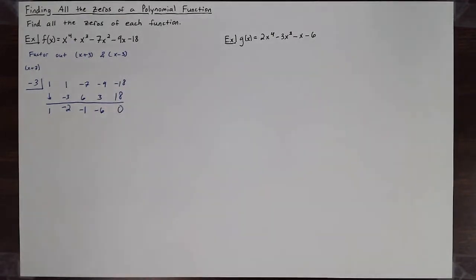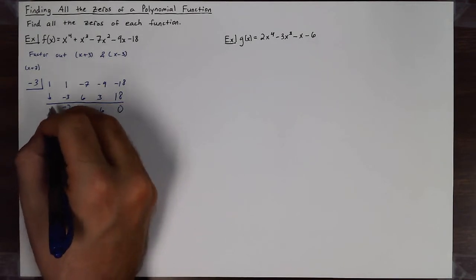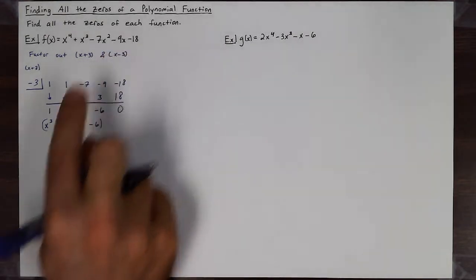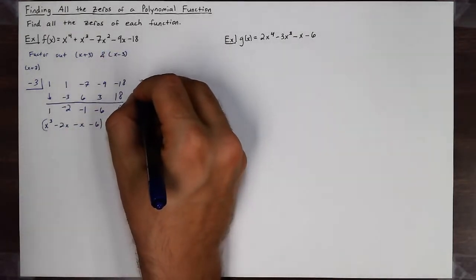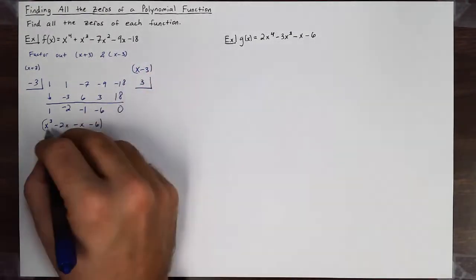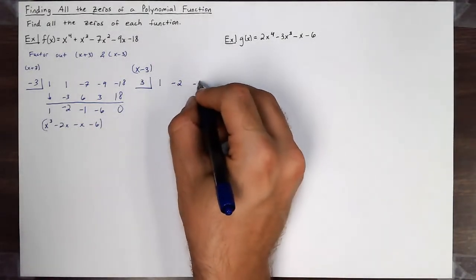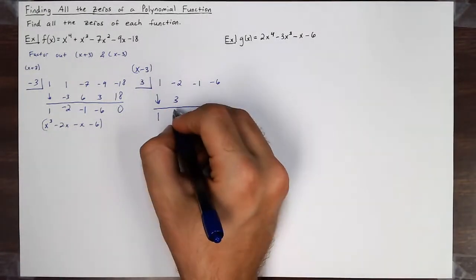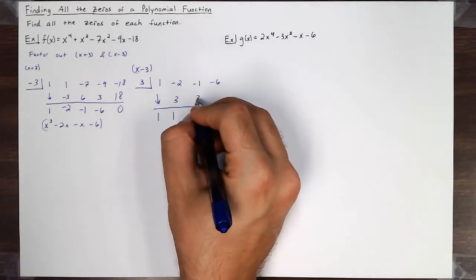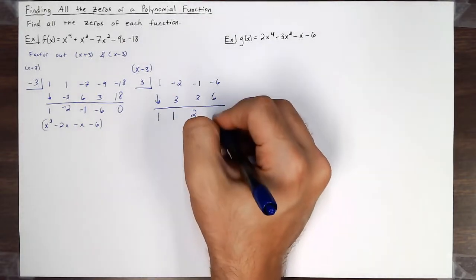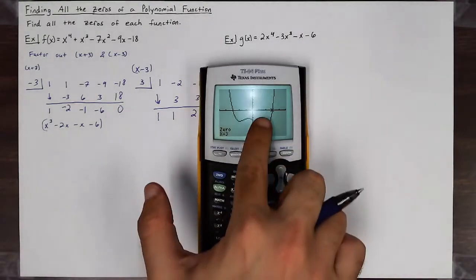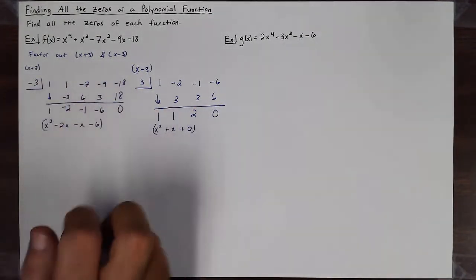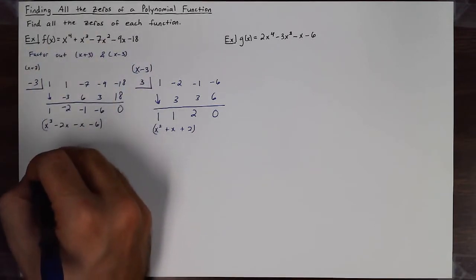That leaves me with the polynomial x³ minus 2x² minus x minus 6, which I'm going to factor (x-3) out of as well. I'll use 3 for x minus 3, with coefficients 1, -2, -1, and -6. Carry the 1 down. 3 times 1 is 3; -2 plus 3 is 1. 3 times 1 is 3; -1 plus 3 is 2. 3 times 2 is 6, giving zero — as expected from the graph. That leaves me with x² + x + 2.